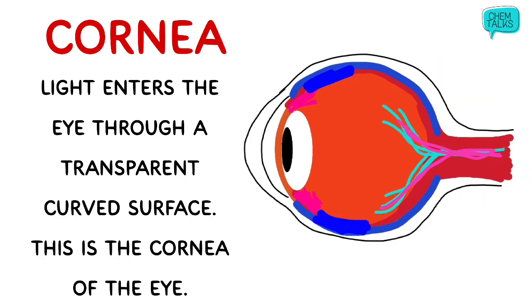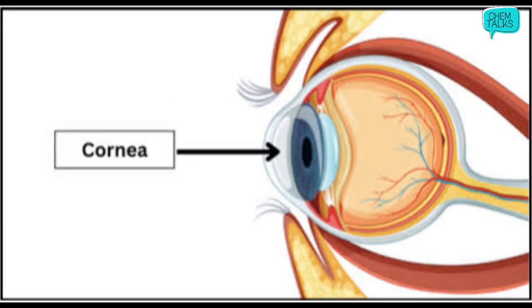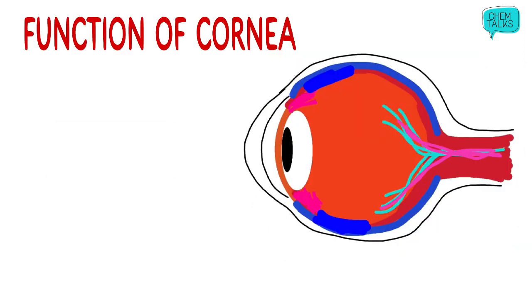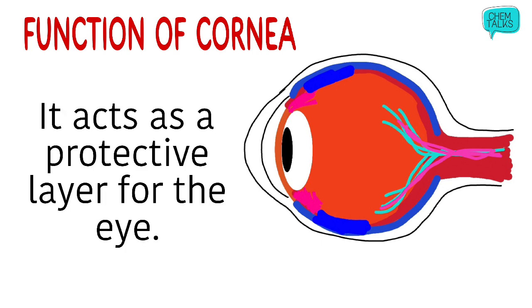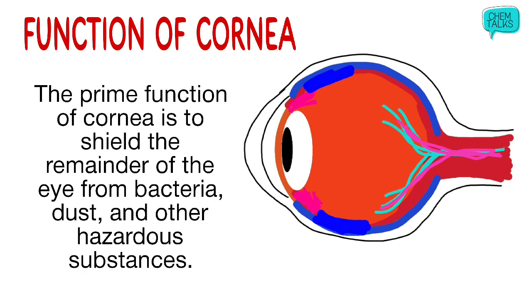Let's discuss the first important part of the human eye, which is the cornea. This is the outermost layer of the eye — the light enters the eye from this transparent surface. In this diagram you can easily visualize the transparent layer on the outside; that is the cornea. The function of the cornea is that it helps protect the eye from harmful bacteria, dust, smoke particles, pollution, and other hazardous materials. So basically, the cornea acts as a protective layer for the eye.